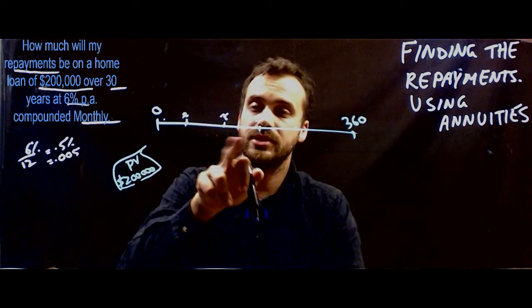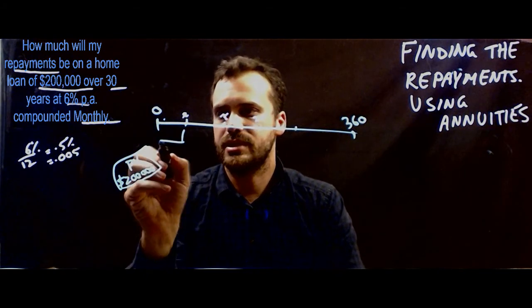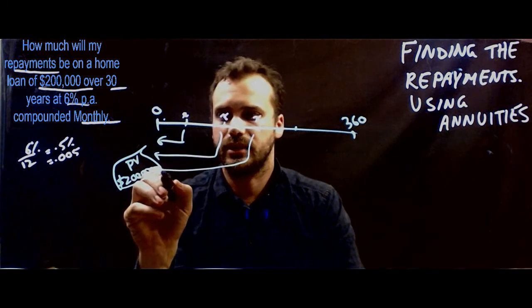each of those payments that will add up to $200,000 when we bring them back. Now remember that this is the sum of a geometric series. Each of these come back here like this.